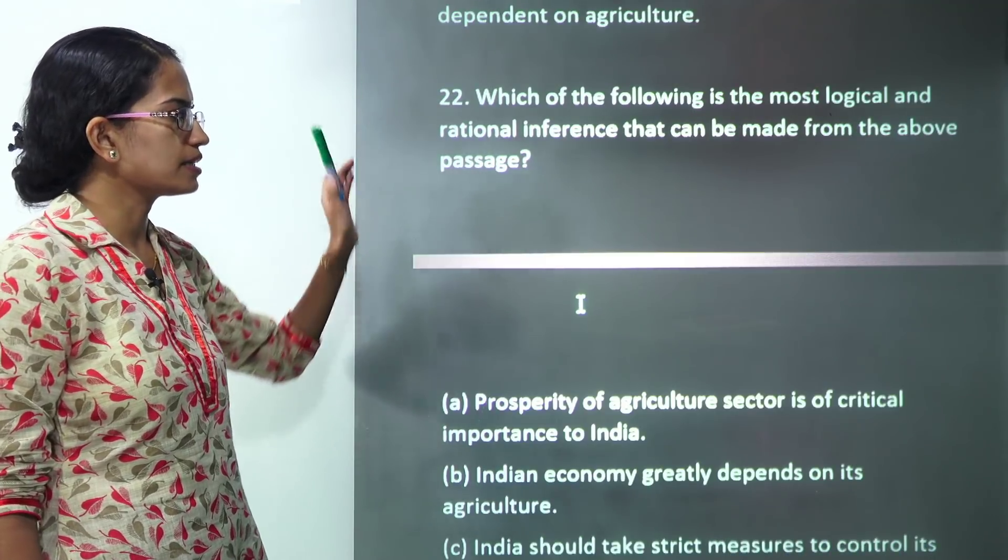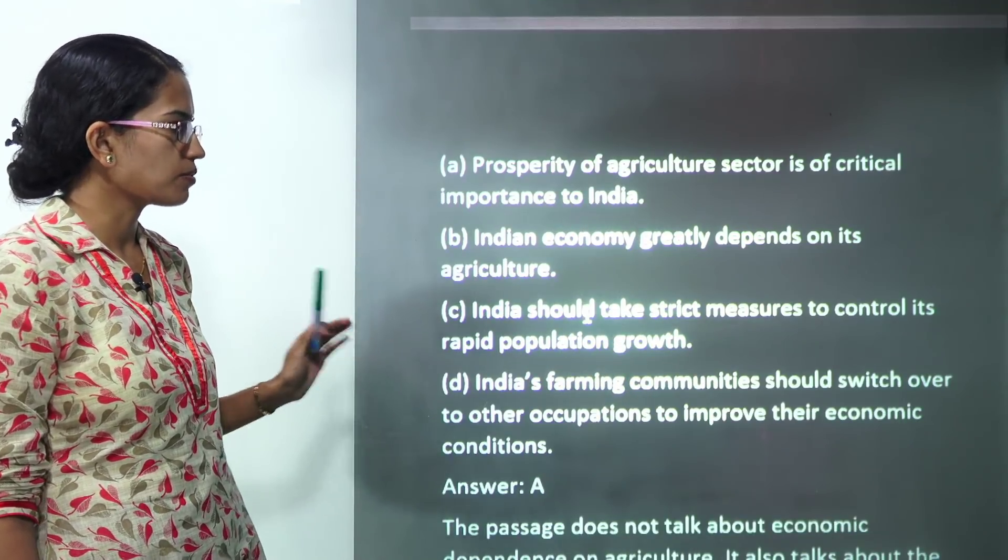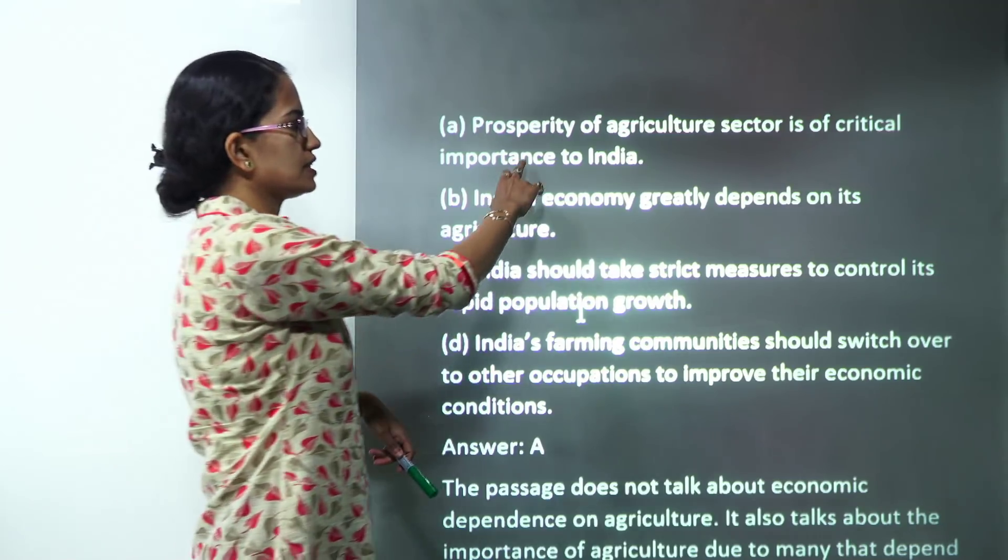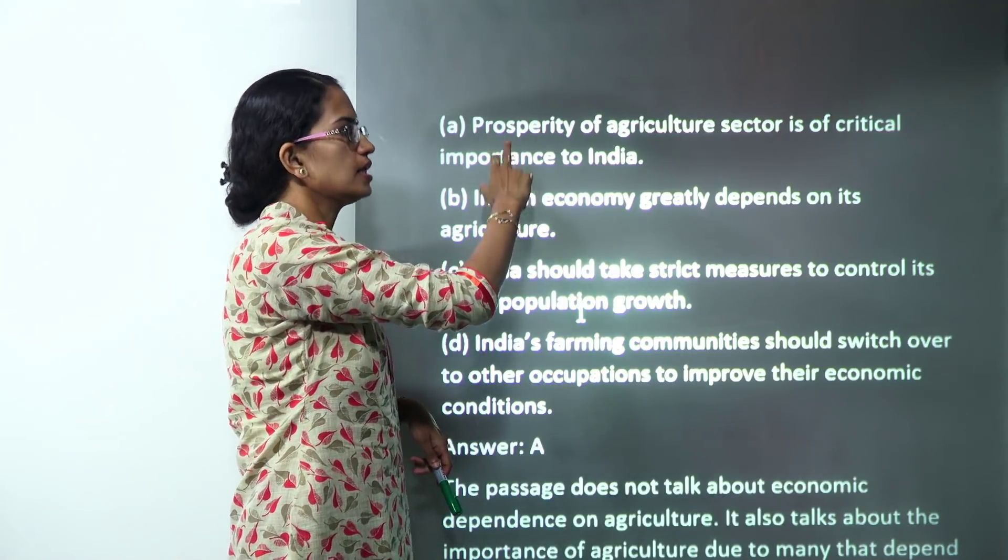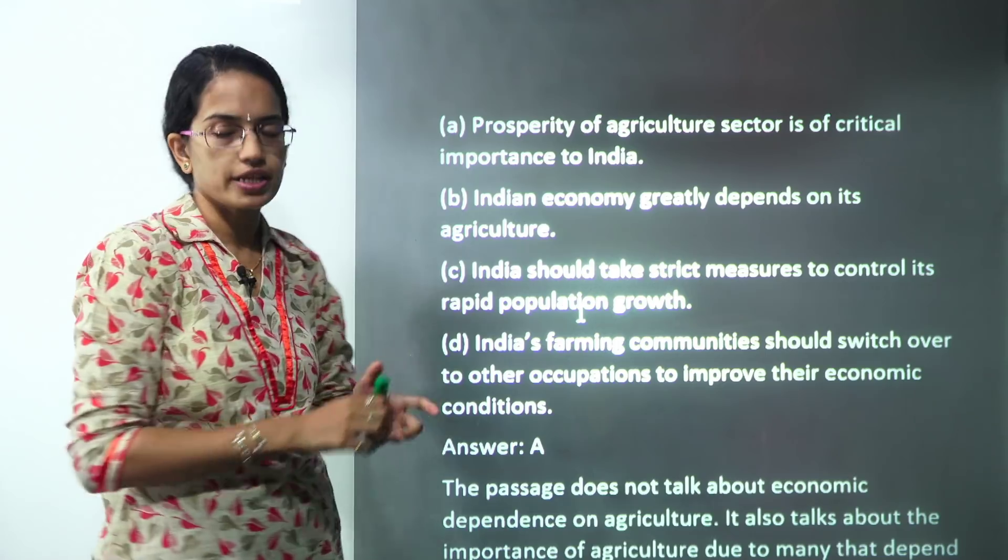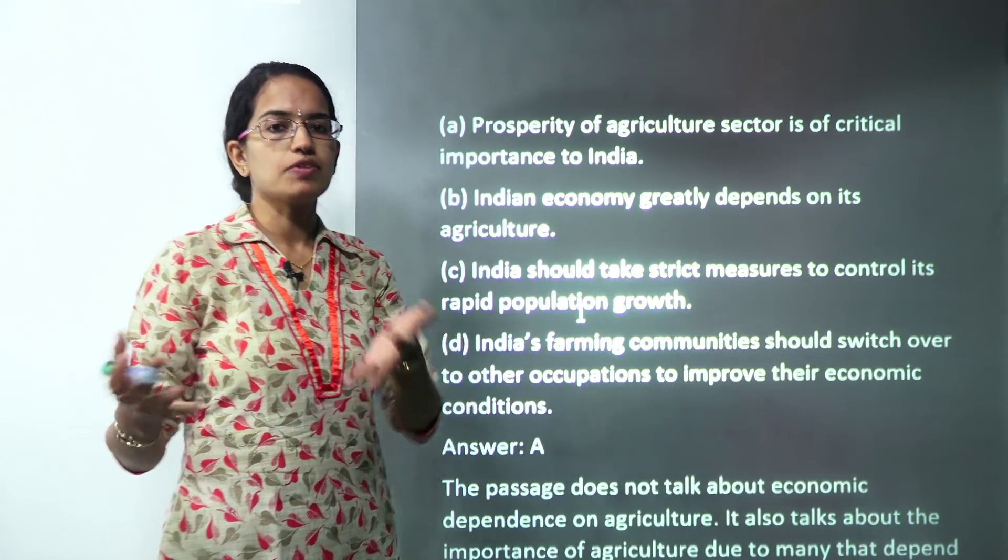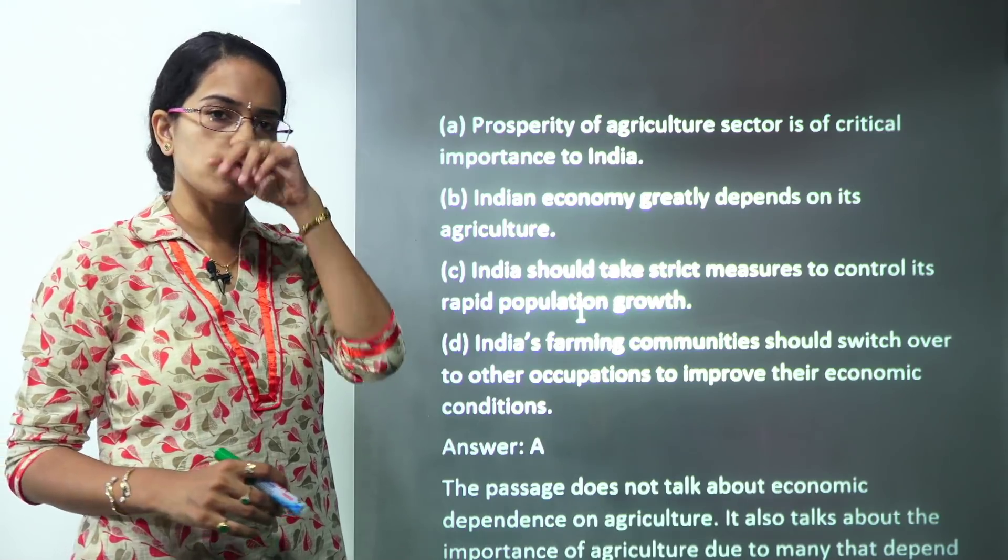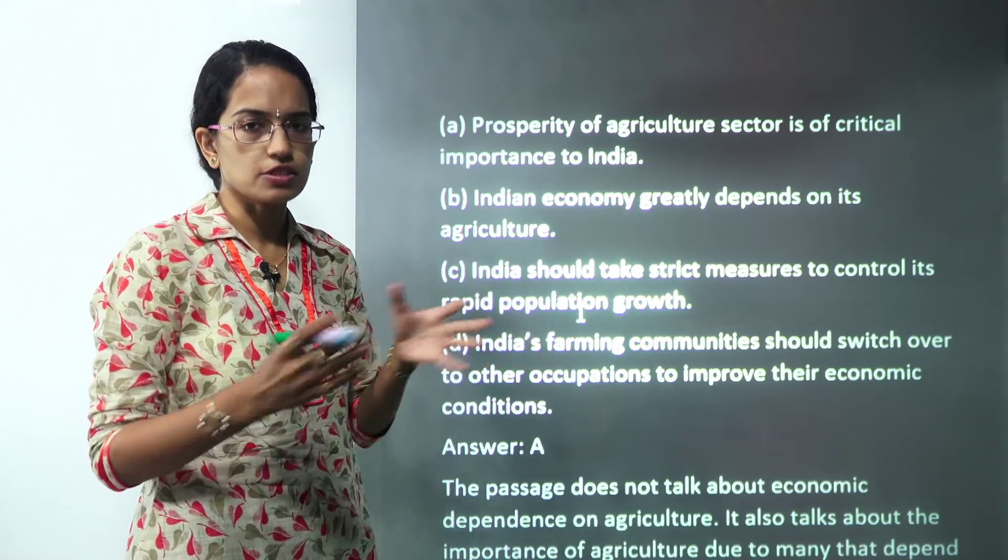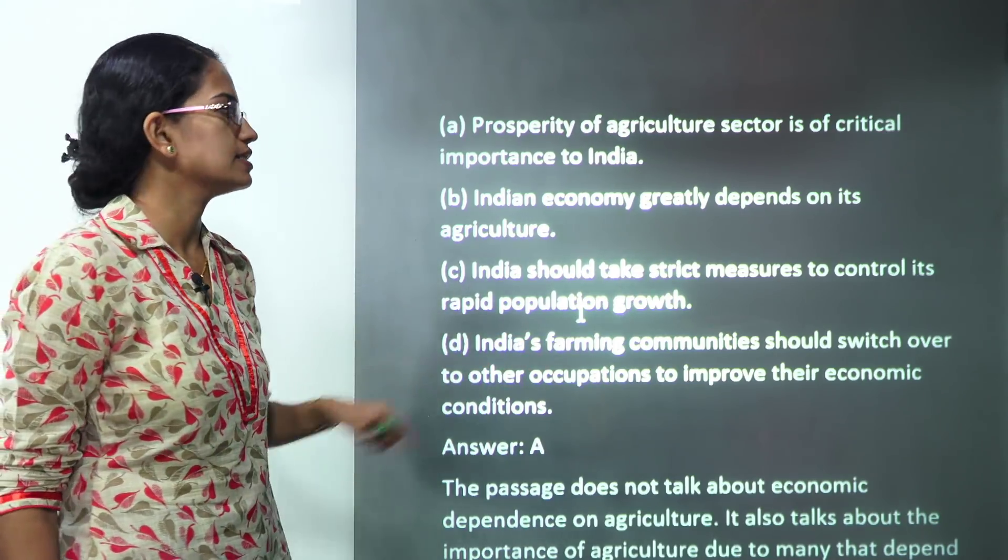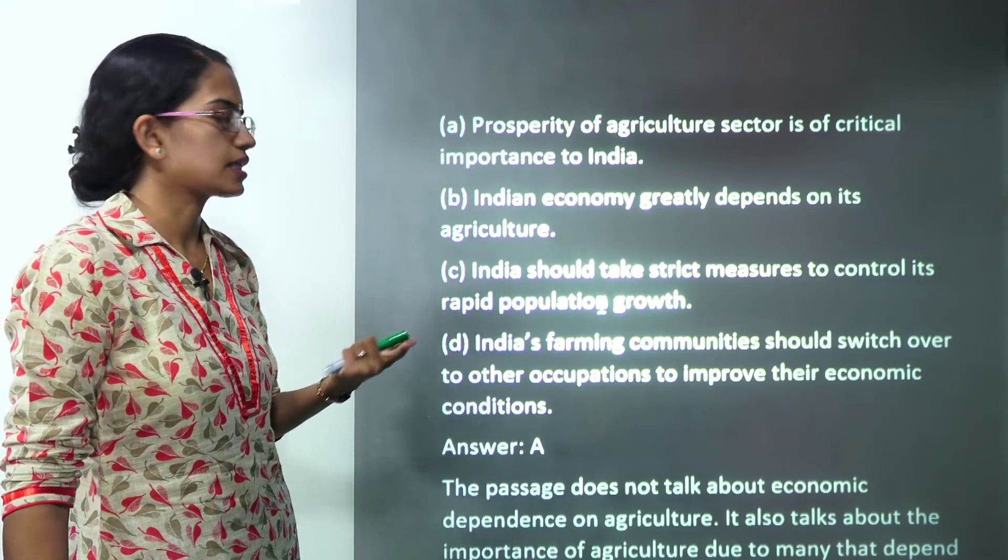And still when we would overtake China we would have 42 percent of the population that would be dependent on agriculture. So what would be the best inference? The best inference is the prosperity of the agriculture sector is important, because still even if we overtake China we would have 42 percent involved in agricultural sector. Therefore prosperity of this sector is important. So A becomes the correct answer here.